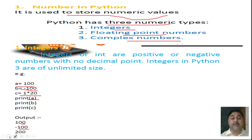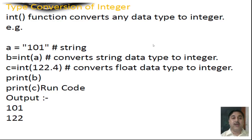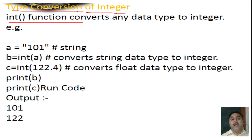There are different types of integer patterns of data types — integer, floating, and complex pattern of data types. This is the first point: the integer pattern of a data type. Now see here the type conversions of the integer. How you write it: int function for conversion of the data type. In this particular area we are using this pattern with different types of strings.